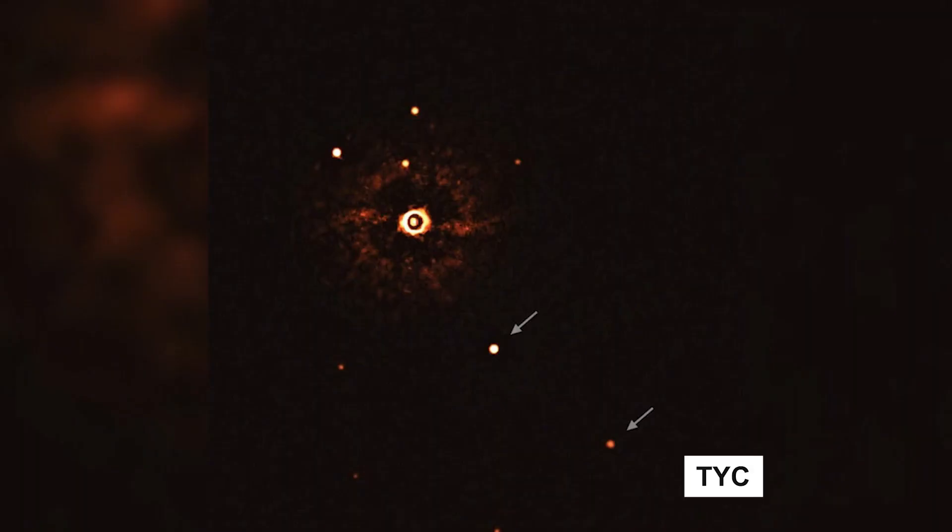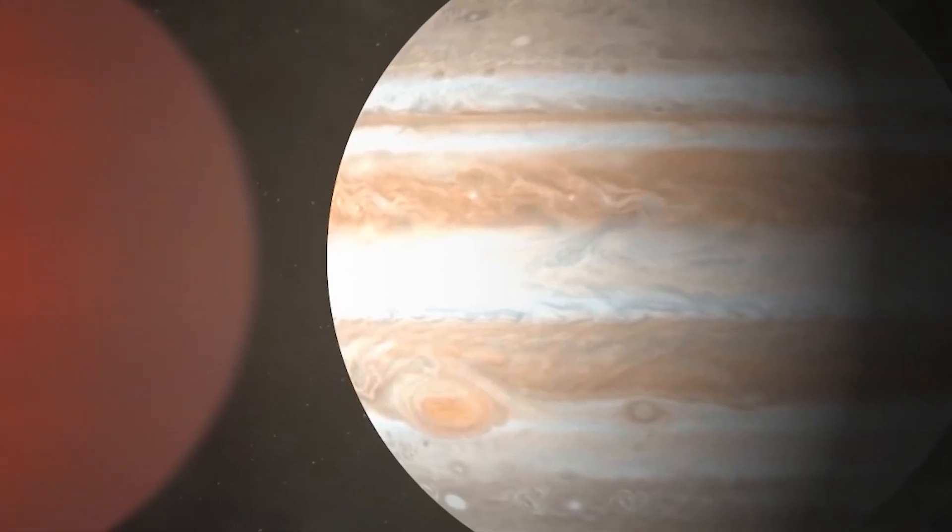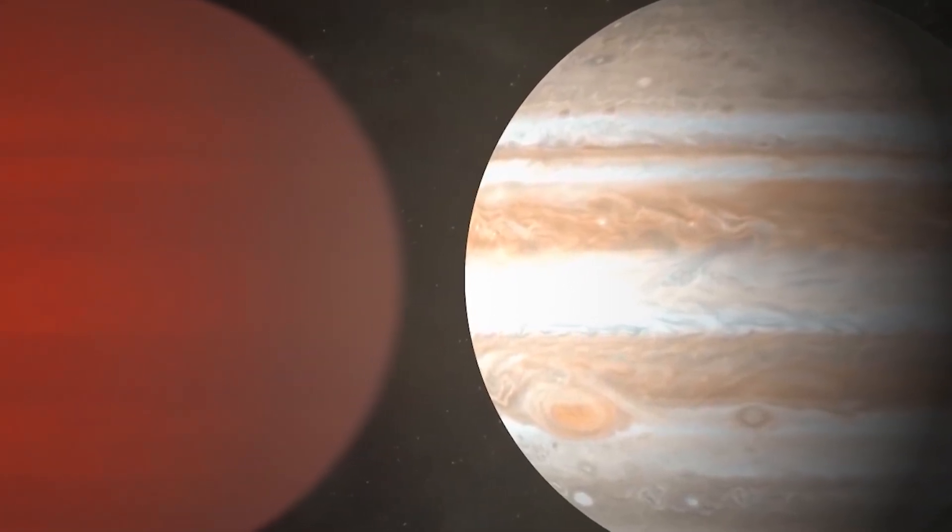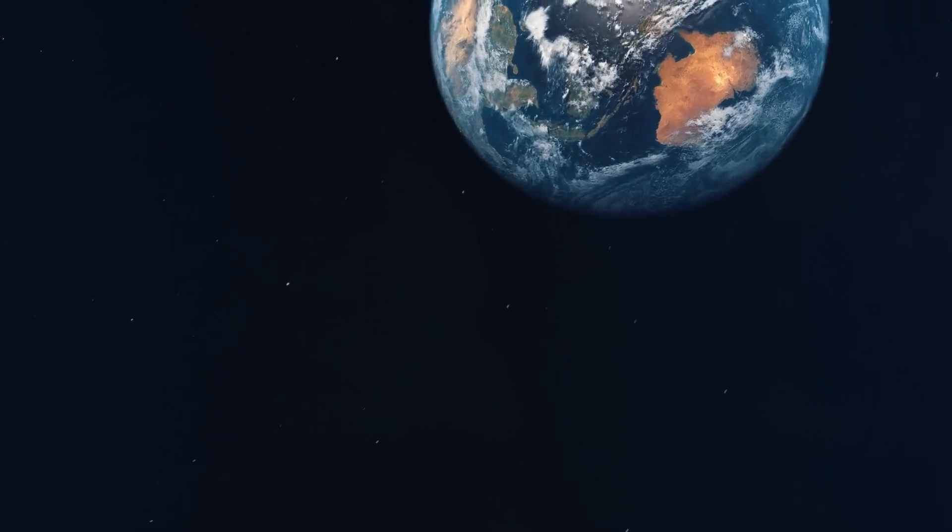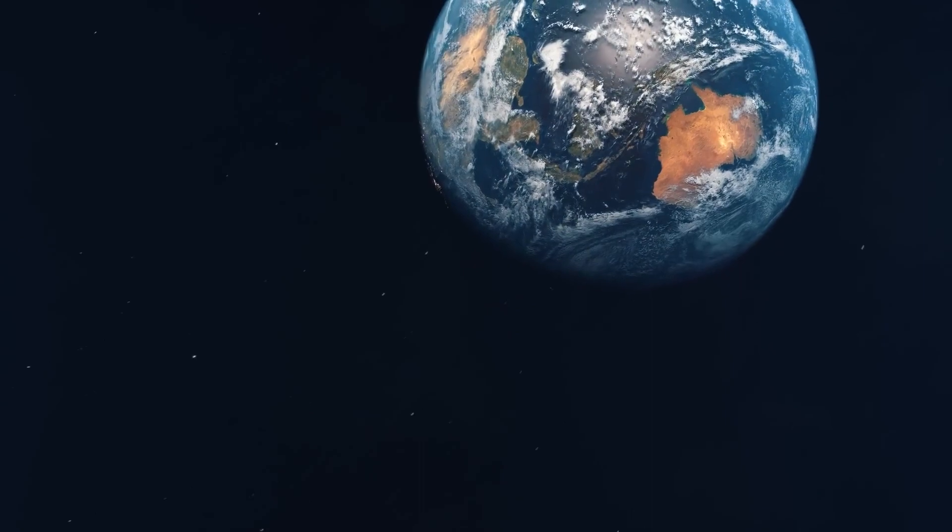Now, TYC 8998-760-1 has two giant planets on display, but it's also quite different from what we know. No Earth-like planets or Neptune and Uranus doppelgangers here.